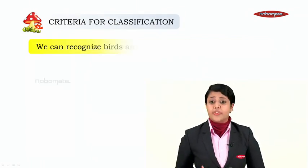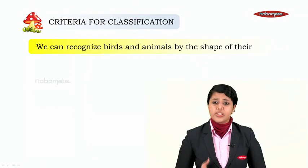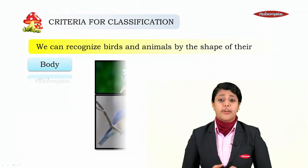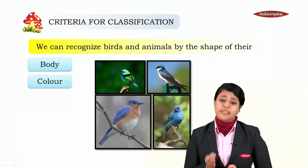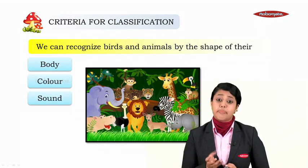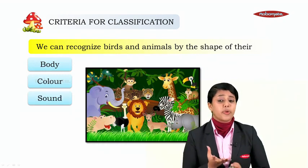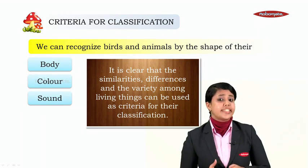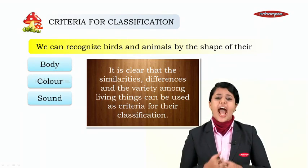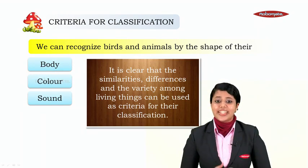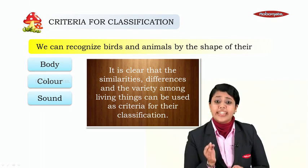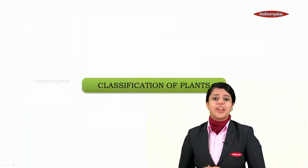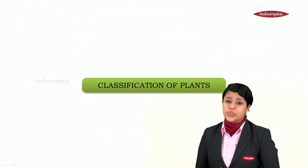For identifying animals, we can recognize birds and animals by the shape of their body, by their color, and by the sound they produce. So it is clear that the similarities, differences, and variety among living things can be used as criteria for classification.